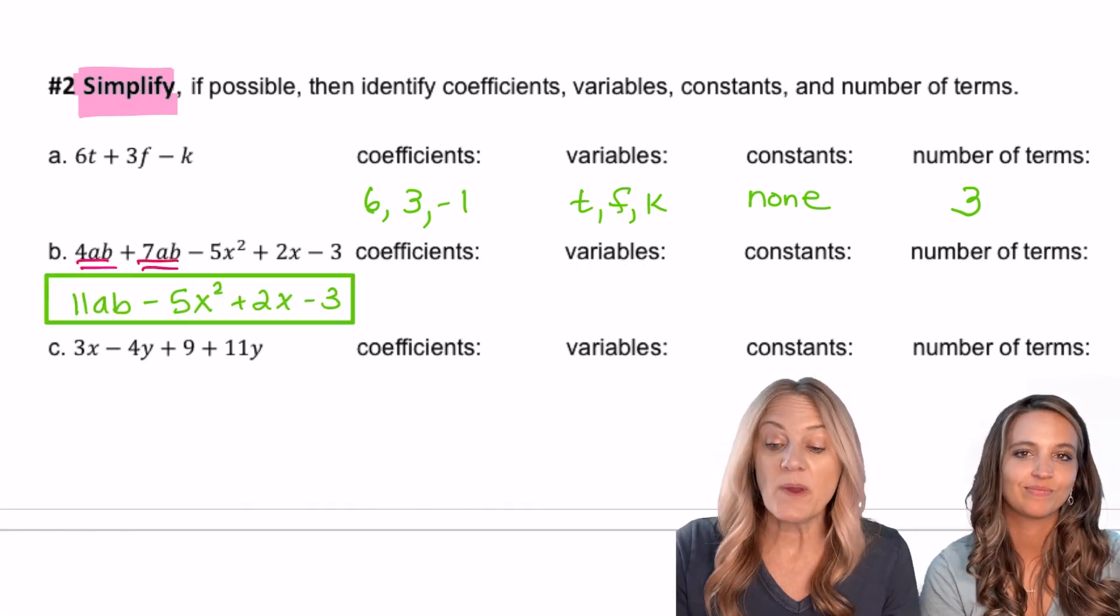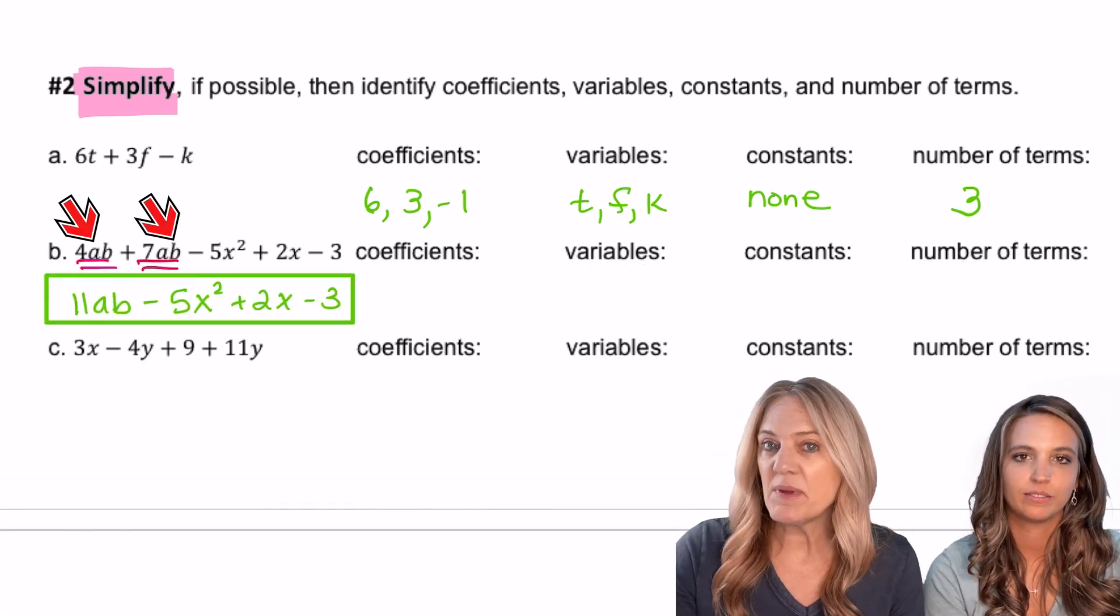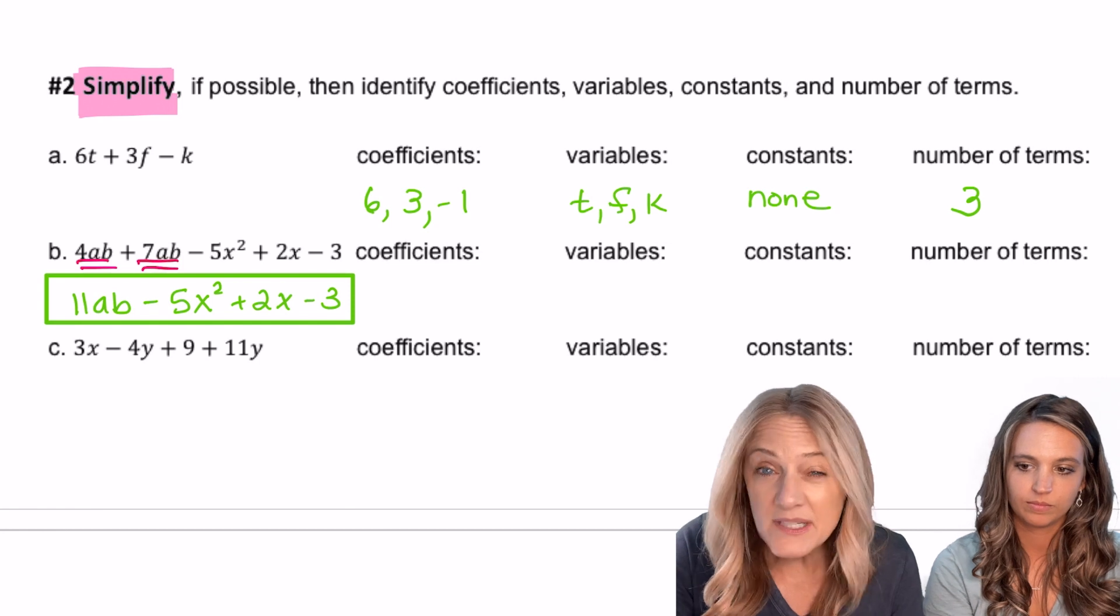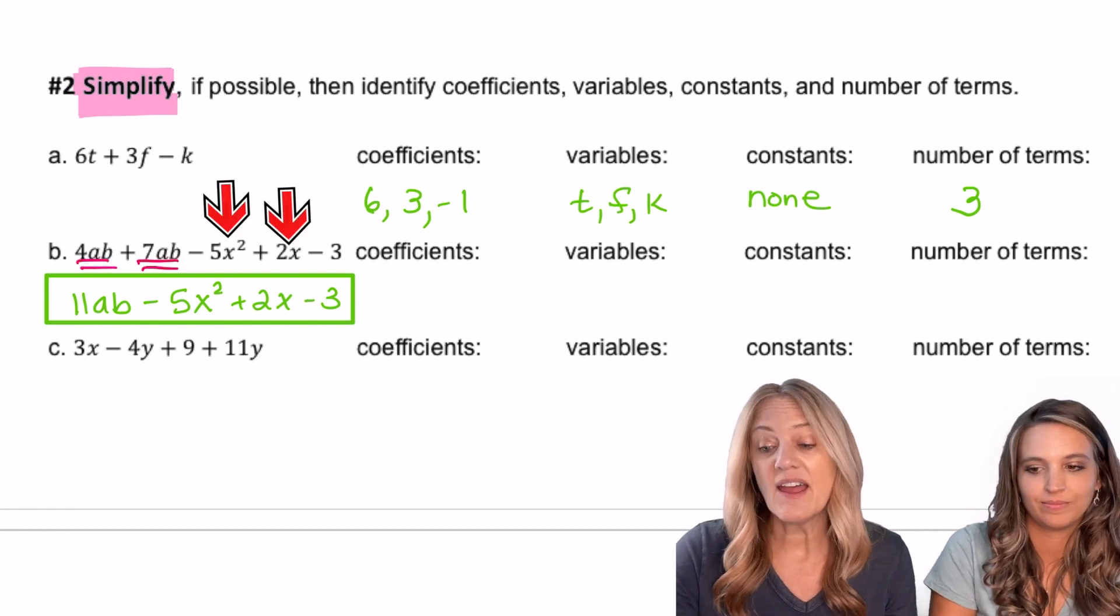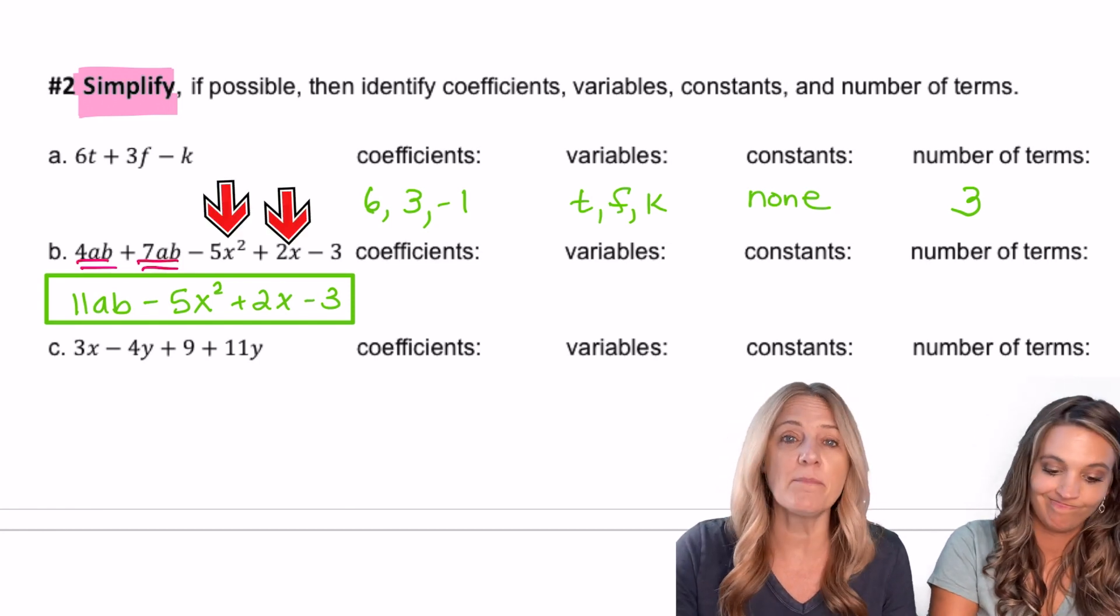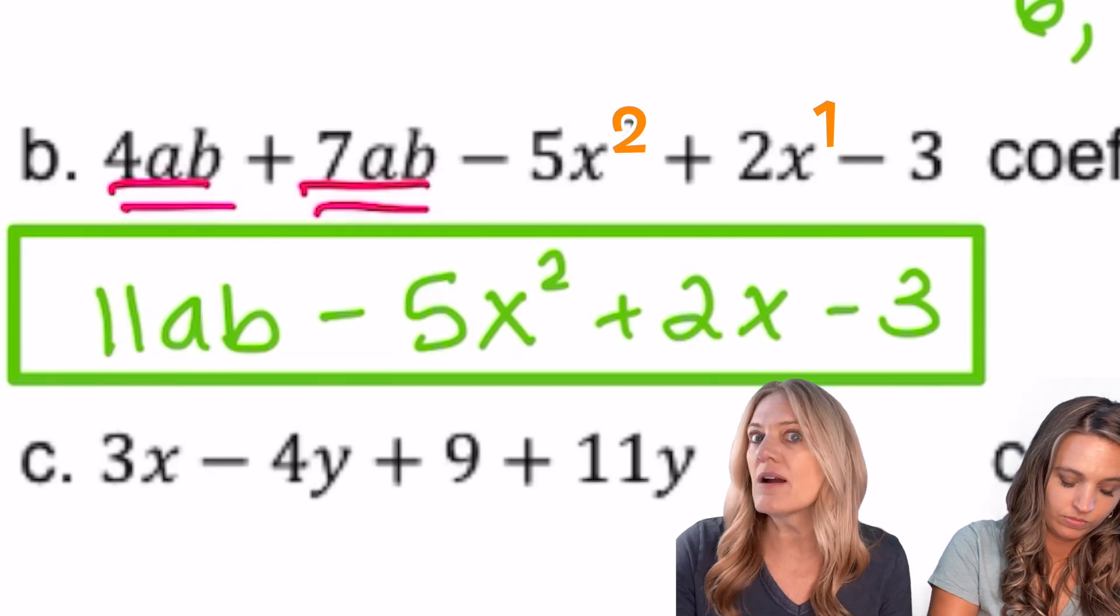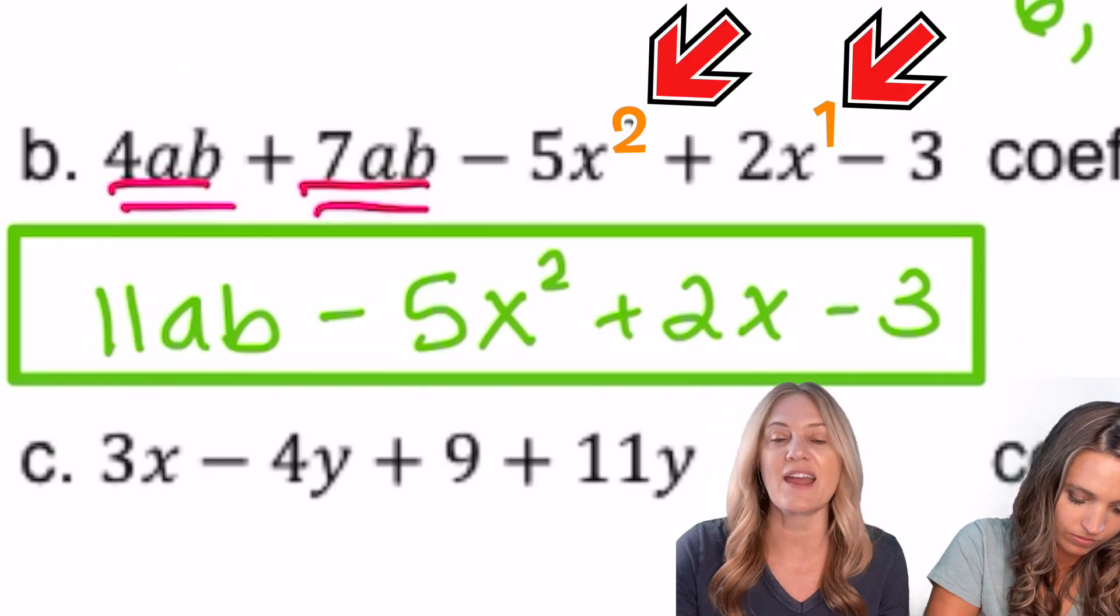So simplifying first: we added the 4ab and the 7ab for 11ab. Were you tempted to combine the 5x² and the 2x? I hope not, because those x's are not raised to the same powers, so they are not like terms.